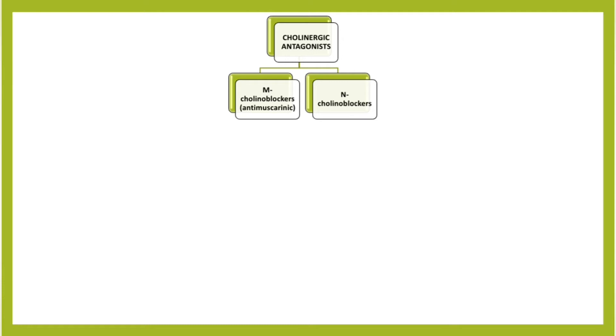M-cholinergic blockers are drugs which block the neurotransmitter in the muscarinic synapses of the parasympathetic nerves and decrease the effects of parasympathetic inhibition. These drugs also block the M-cholinergic receptors in the sympathetic neurons, inhibiting sweat glands.